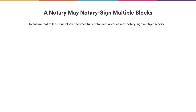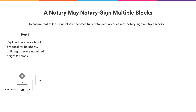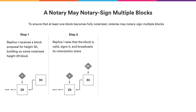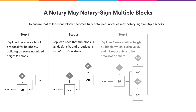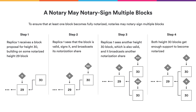Notarization will not always work as smoothly as described. A replica might see a valid block and create a notarization share on it, but then see another candidate block at the same height which is also valid. If the replica would only sign one of the blocks, we might get stuck because some notaries support one block while others support another, and neither gets enough approval. Because we need this liveness property, the notary will actually sign both blocks, making sure at least one becomes notarized. This way we might obtain multiple notarized blocks at one height.